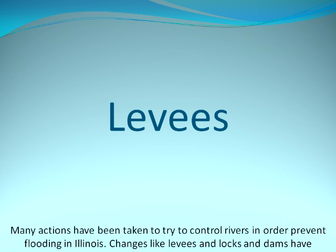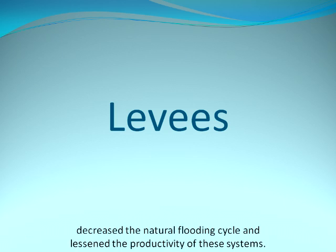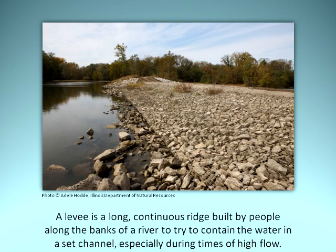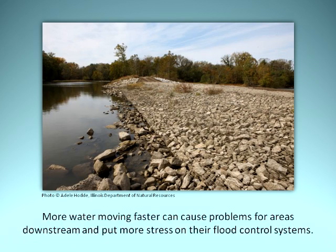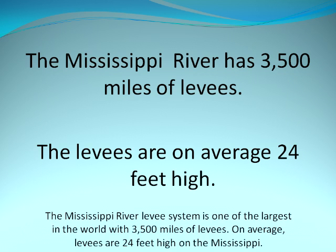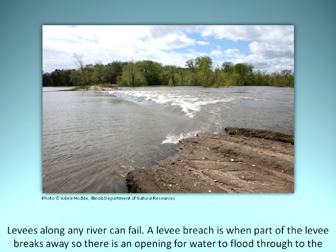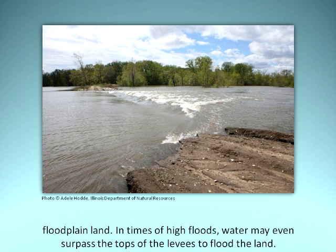Many actions have been taken to try to control rivers and prevent flooding in Illinois. Changes like levees and locks and dams have decreased the natural flooding cycle and lessened the productivity of these systems. A levee is a long, continuous ridge built by people along the banks of a river to contain the water, especially during times of high flow. By keeping water contained, people hope to prevent flooding of adjoining land, but this results in higher water flowing faster, causing problems for areas downstream. The Mississippi River levee system is one of the largest in the world with 3,500 miles of levees, averaging 24 feet high. A levee breach is when part of the levee breaks away, creating an opening for water to flood through the floodplain land. In times of high floods, water may even surpass the tops of levees.